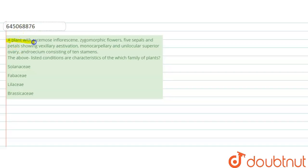The question says: a plant with racemose inflorescence, zygomorphic flower, five sepals and petals showing vexillary aestivation, monocarpellary and unilocular superior ovary, and androecium consisting of 10 stamens. The above list of conditions raises characteristics of which family of plant?